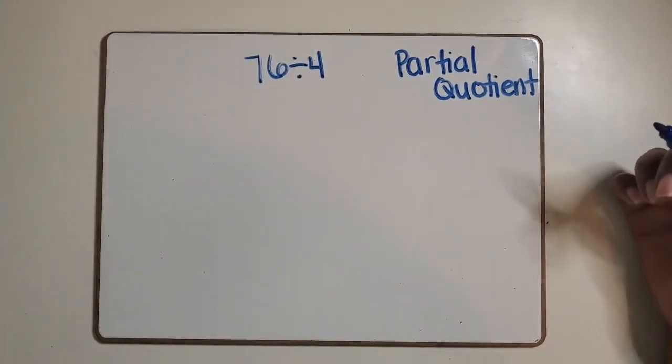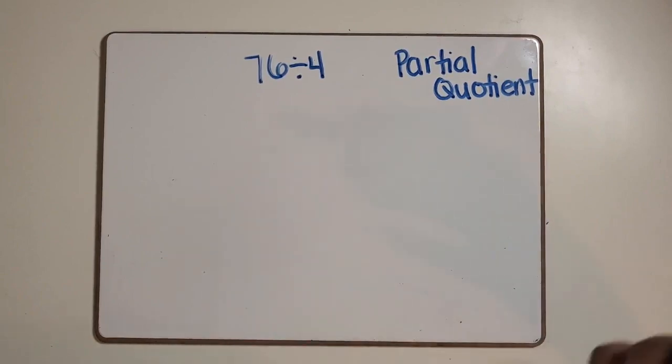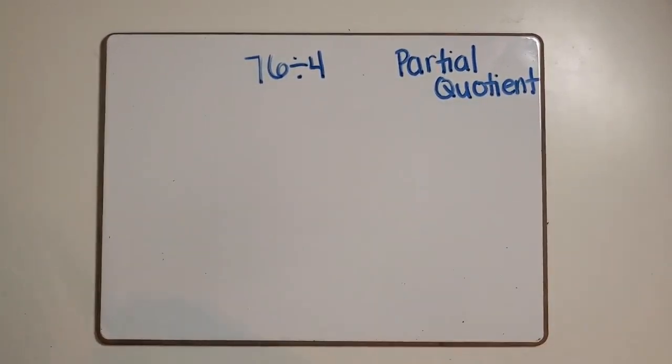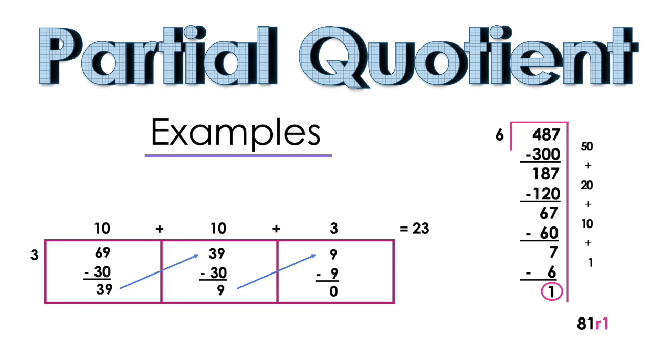We're using the partial quotient strategy, a way to use place value and multiplication facts that you are comfortable with in order to find parts of the quotient and then join those parts together to find the total quotient.